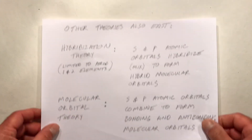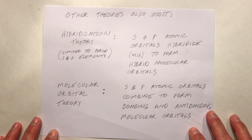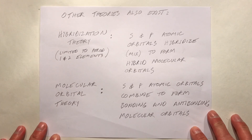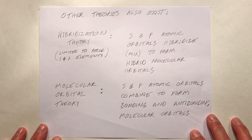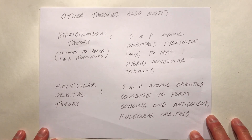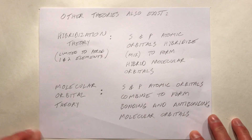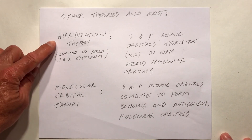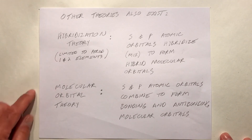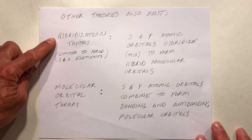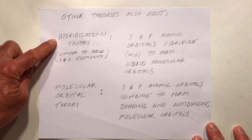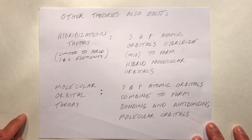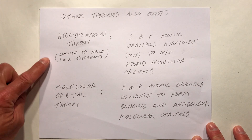There are three P orbitals making up the P sublevel. One theory that addresses this is hybridization theory, used extensively in organic chemistry. It is somewhat limited — relatively recently we found that atoms beyond period 2 don't follow hybridization theory very well.